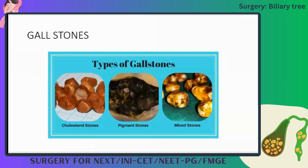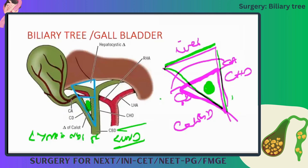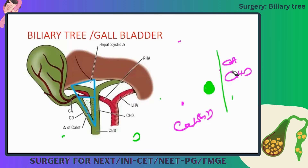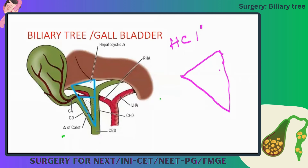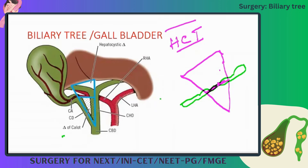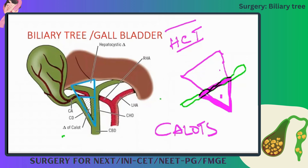Quick review of both triangles: the hepatocystic triangle has the cystic duct, common hepatic duct, and the liver base as its boundaries, and the cystic artery is its constituent. Calot's triangle is formed by the cystic artery, common hepatic duct, and cystic duct, and contains the lymph node of Lund inside it.